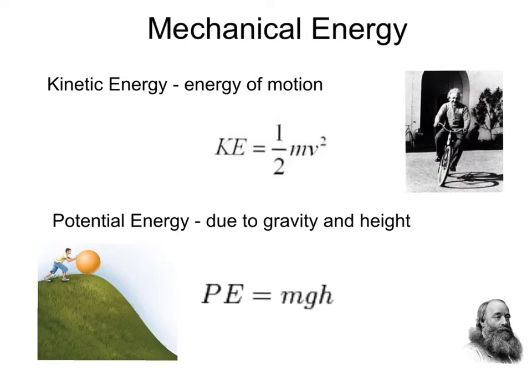To calculate the amount of kinetic energy he would have, we just take one half times the mass times the velocity squared.